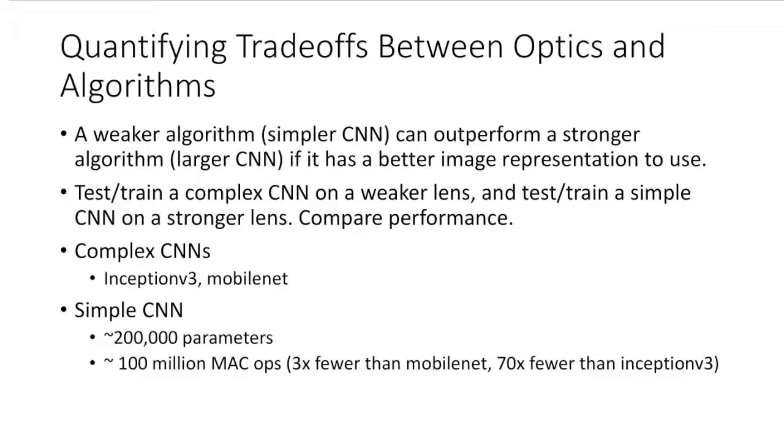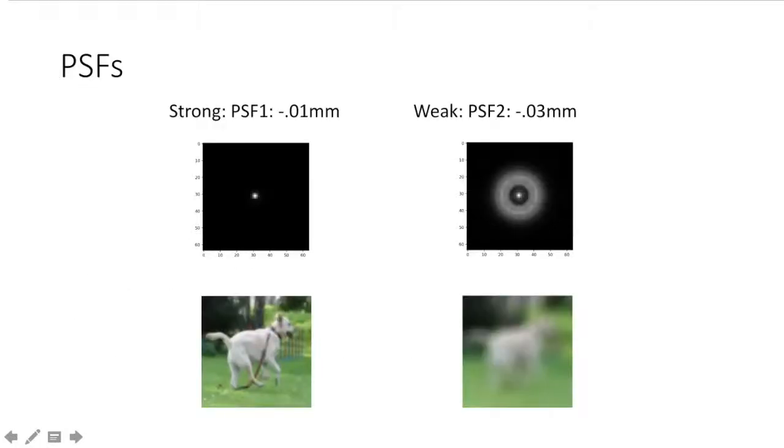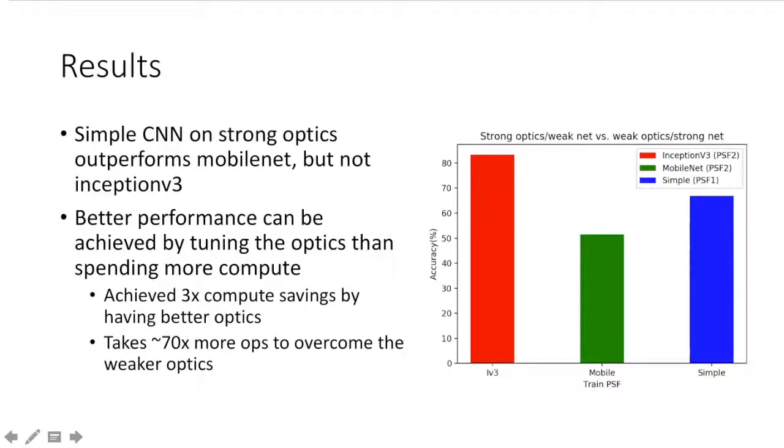We compare it on a stronger optical system to Inception v3 and MobileNet on a weaker optical system. We consider our strong optical system to be PSF1 and our weak optical system to be PSF2 from the previous experiment. In our results, we see that the simple convolutional neural net on the stronger optics is able to outperform MobileNet but not Inception v3. This overall suggests that there is a trade-off between optics and compute in the algorithm domain. We've shown that we're able to achieve three times compute savings by having better optics, and that it takes approximately 70 times more operations to actually overcome the weaker optics, as we can see with Inception v3.